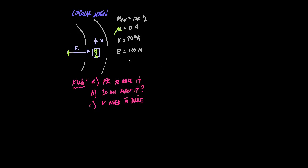And a radius of 100. And we're going to find these things down here in pink. The friction we need to make the corner, and then obviously we'll ask the question, do we make the corner, and then see if we don't make it, what's the velocity we need to drive. So that'll be the new velocity.